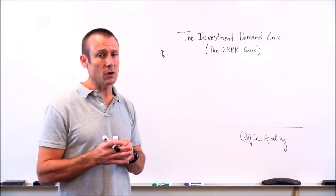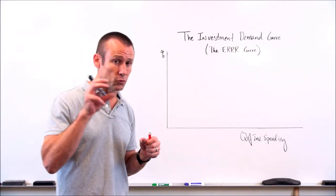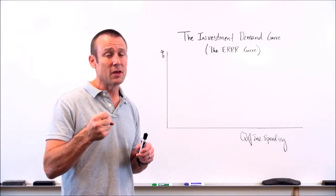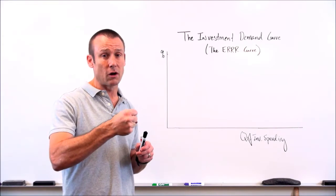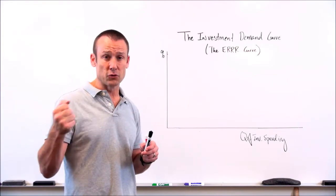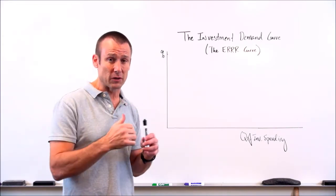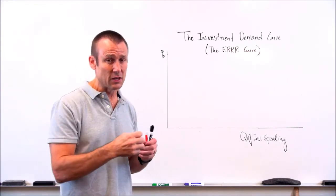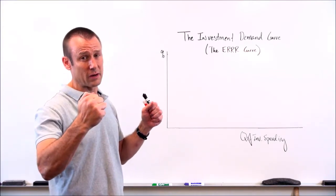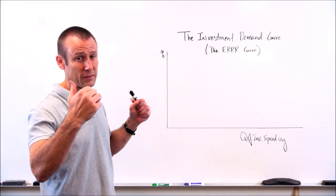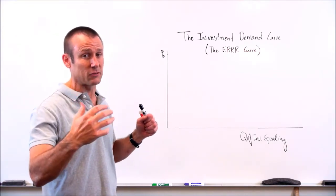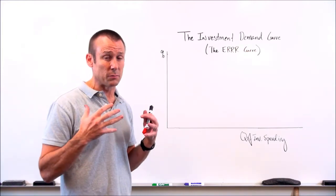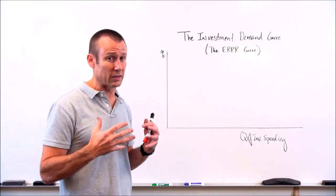So anytime we talk about the investment demand curve at the macro level, we're just going to see a line. Now, I do want you to know that if you zoomed in on that line, you would see the type of stuff we saw in the first two videos — a stepwise function, a bunch of dots. But we're zoomed out, and that's what we do in macroeconomics, looking at the economy as a whole. So the investment demand curve is very much going to look like a line.